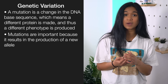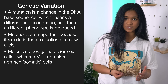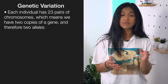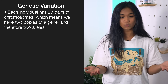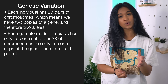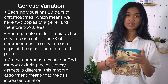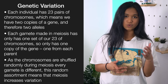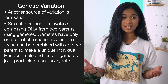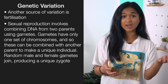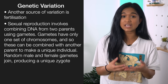Another way of gaining variation is through meiosis. Remember, meiosis creates gametes or sex cells, whereas mitosis is the production of non-sex cells or somatic cells. Each individual has 23 pairs of chromosomes, meaning two copies of a gene and therefore two alleles — for example, a big W and a small W. Each gamete made in meiosis has only one set of our 23 chromosomes, so only one copy of the gene — one set from our mum and one from our dad. Chromosomes are shuffled randomly during meiosis, and this random assortment ensures that a different gamete is produced each time. Another source of variation is through fertilization — sexual reproduction combines DNA from two parents using gametes, combining one parent's set of chromosomes with another's to make a unique individual, or zygote.